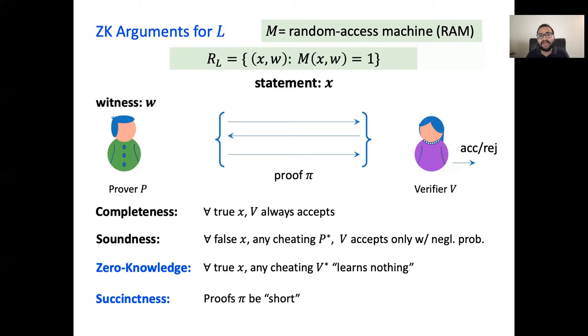Another important property is succinctness, which requires the proof size — the transcript of this interaction — to be significantly smaller than the running time of the underlying RAM program.